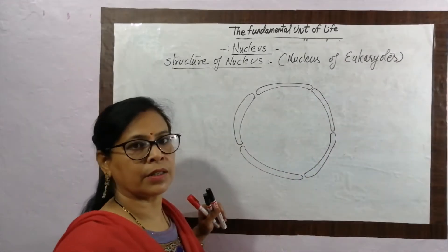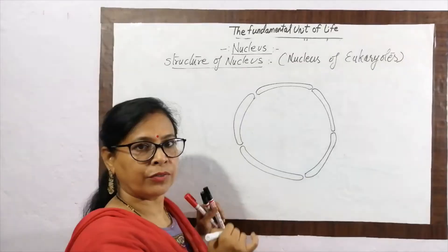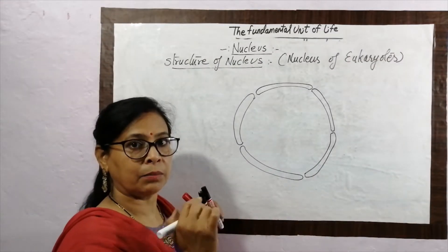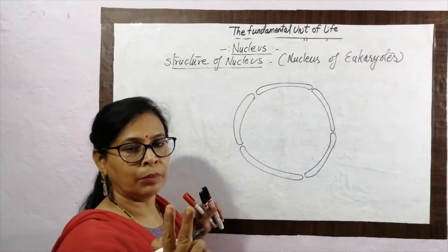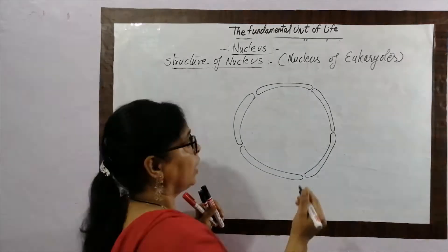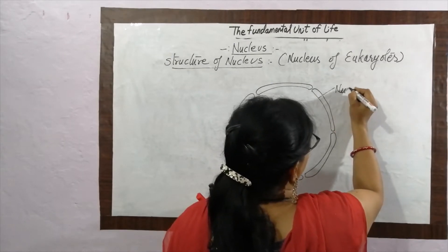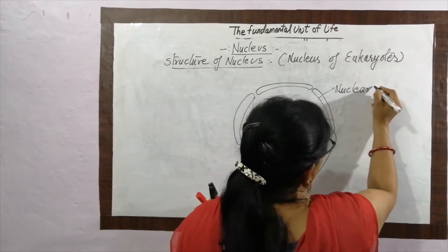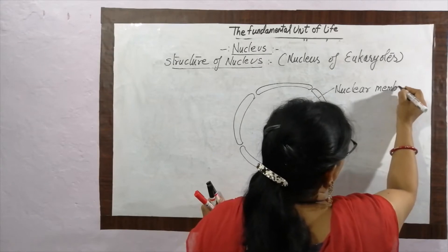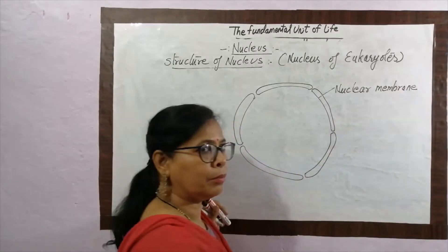You see, this is the nucleus. The first layer, that is the outside of the nucleus, is a double membrane bounded structure. Double means two, membrane means the covering. This double membrane bounded structure is called the nuclear membrane. The membrane of the nucleus is called the nuclear membrane.